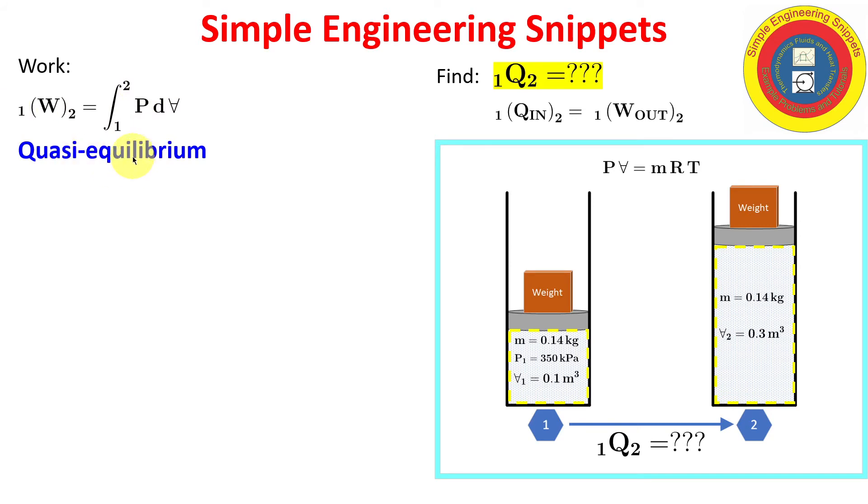Again, work is not a property. It is path-dependent, and so we actually need to know some details about the path. It's a quasi-equilibrium process, so we are able to do that. Let's dive into that.